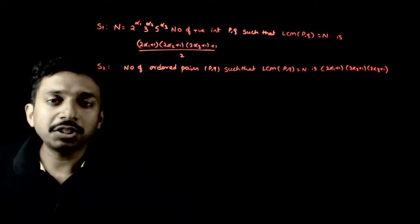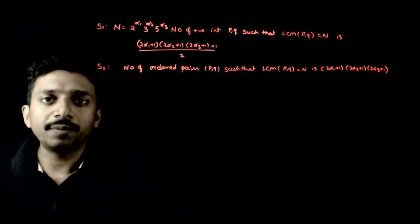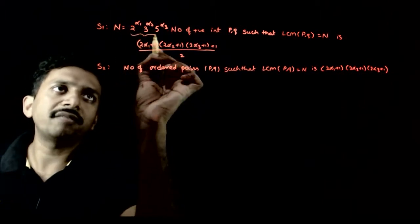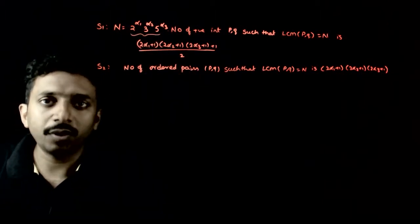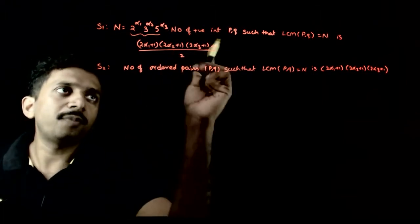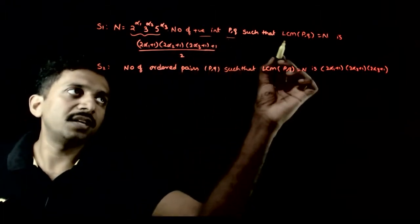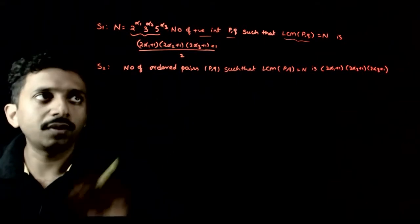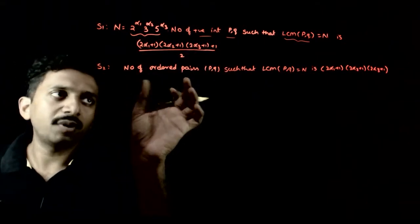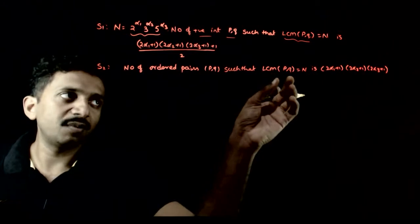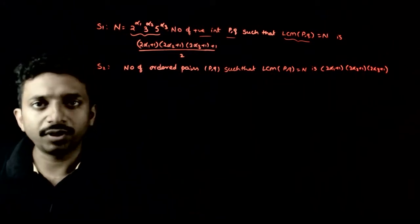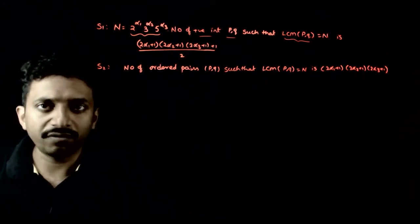Welcome students. This question has two statements. First statement: a number n whose prime factorization is 2^α1 · p^α2 · 5^α3, and the number of positive integers p, q such that LCM(p, q) = n is given. Second statement: the number of ordered pairs p, q such that LCM(p, q) = n is (2α1+1)(2α2+1)(2α3+1).